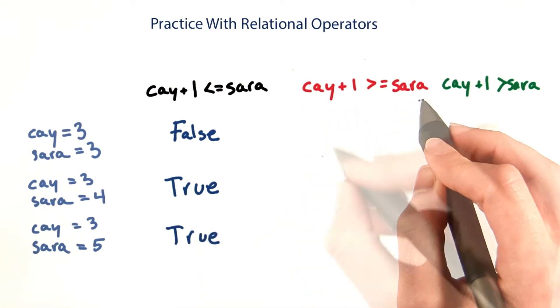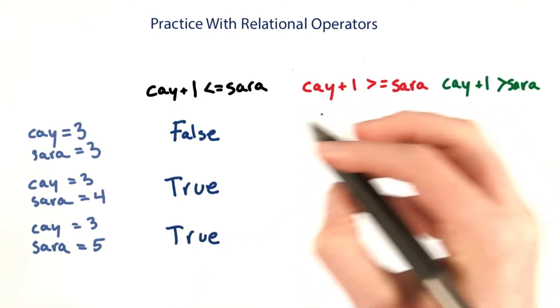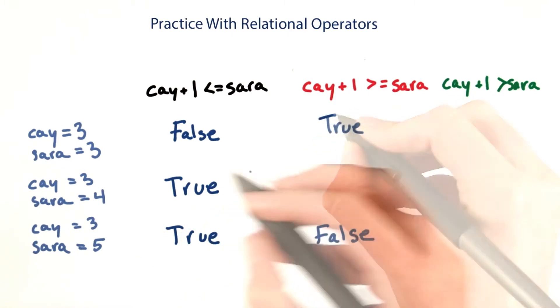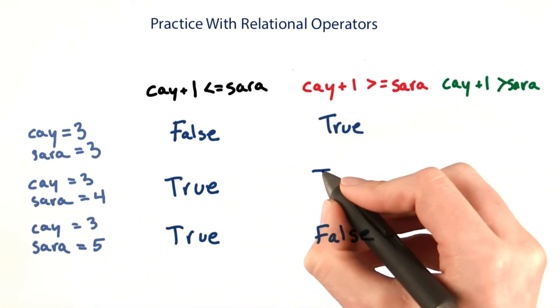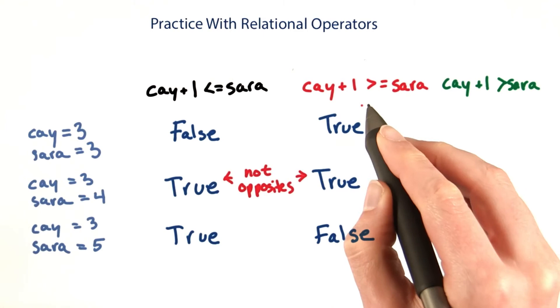Now for the next condition, we find that they disagree on conditions that are not right on the boundary. But right on the boundary, they agree. So these conditions are not opposites.